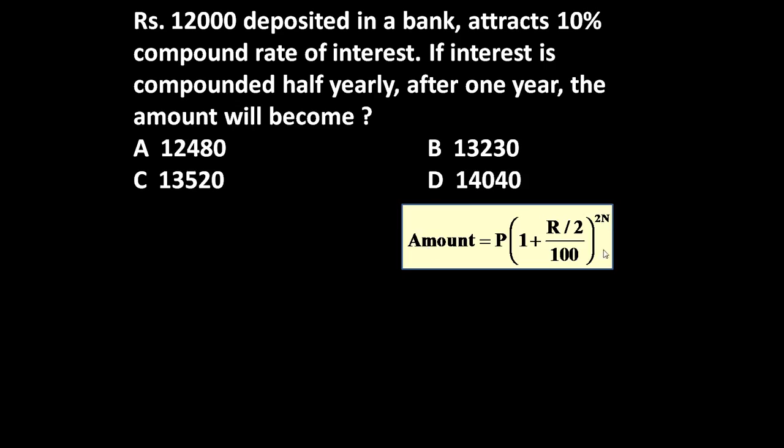So first let us see the formula used if interest is compounded half yearly. Amount is equal to P into 1 plus R by 2, because interest is compounded half yearly, that is why R by 2 raised to the power 2N. N is the number of years.